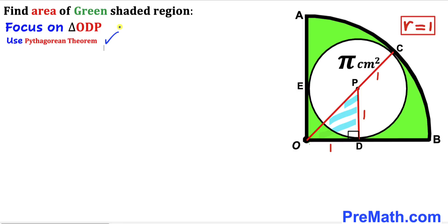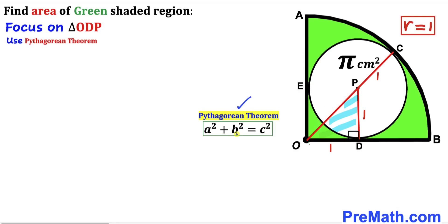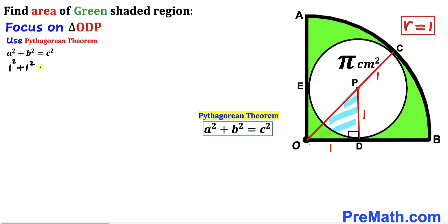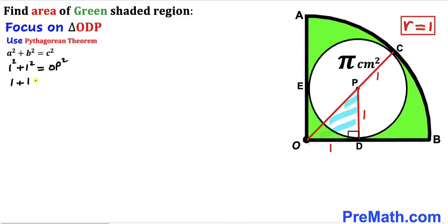We are going to apply the Pythagorean theorem on triangle ODP to calculate the hypotenuse OP. Using a square plus b square equals c square, OP is the hypotenuse and the two legs are 1 and 1. So 1 square plus 1 square equals OP square, giving 1 plus 1 equals OP square, so OP square equals 2. Taking the square root of both sides, OP equals square root of 2.